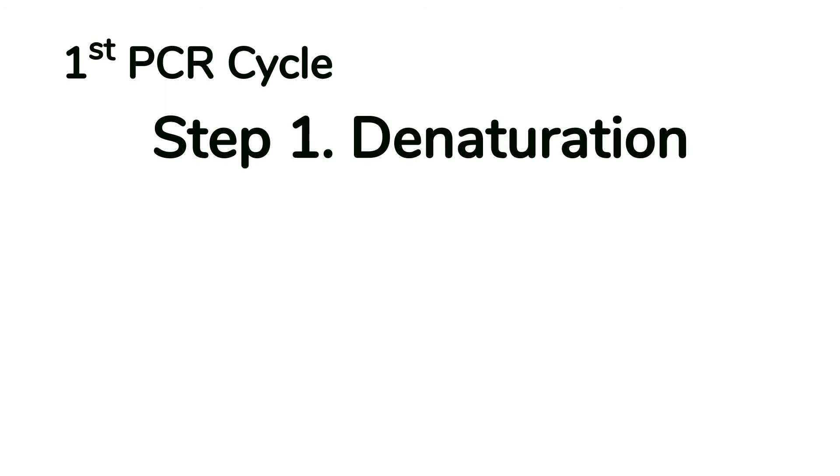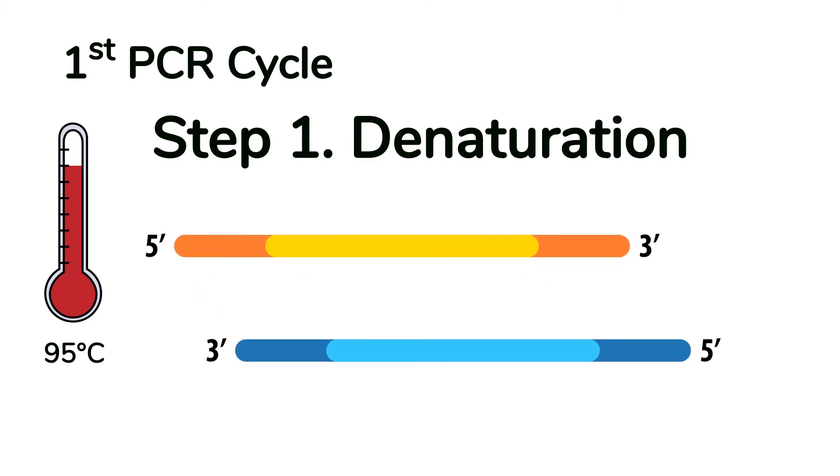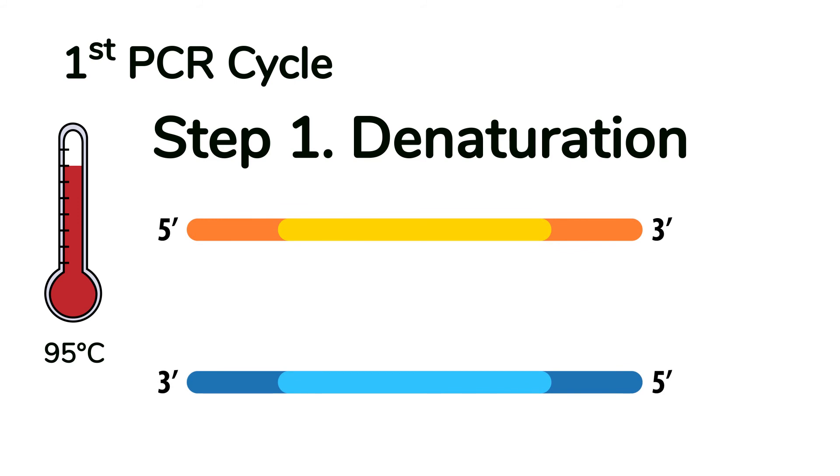Let's look at the first PCR cycle. Step one, denaturation. The test tube is heated to 95 degrees Celsius. At this temperature, the double-stranded DNA template dissociates into two single strands.